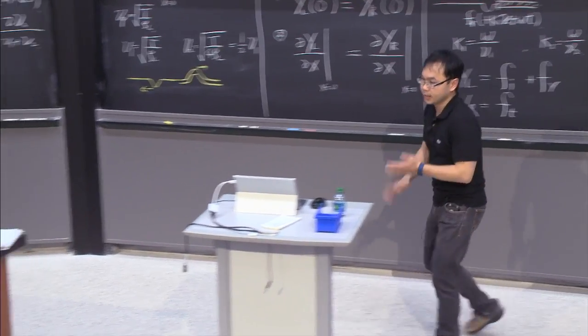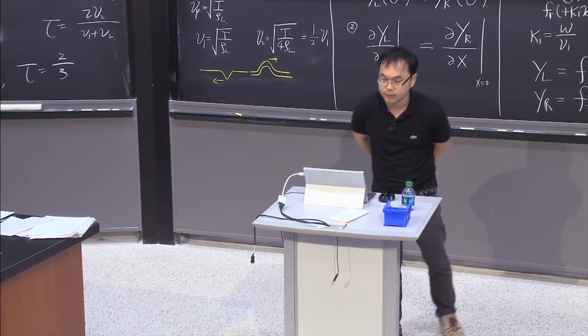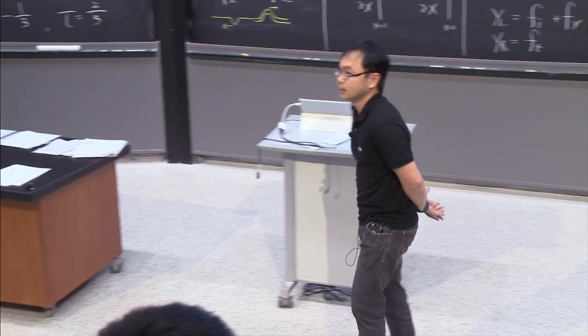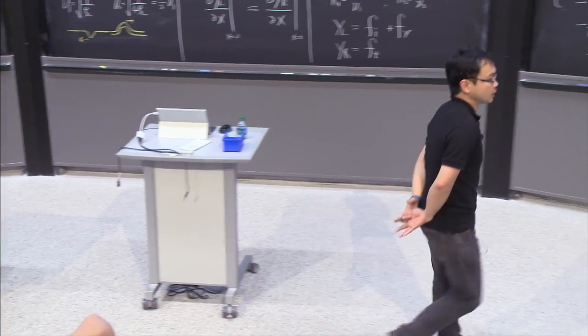So what we have learned today: the traveling wave solution f(x − vp·t), energy of an oscillating string (kinetic and potential energy), how to decompose a stationary shape into two traveling waves, and how to match two media using boundary conditions to find reflection and transmission coefficients. Next time we will talk about more systems described by the wave equation and dispersion relations. Thank you, and see you Thursday.